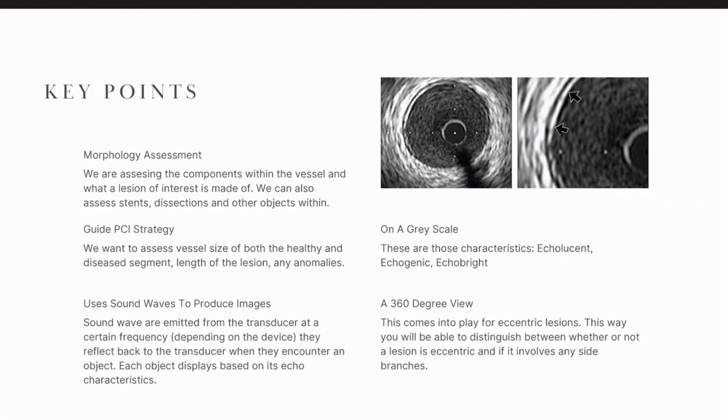Some key points: what is IVUS really used for? First of all, morphology assessment — meaning what is it made of? We're assessing the components within the vessel and what a lesion of interest is made of. Of course, if there's other stuff in the lumen like stents, dissections, even thrombus, you're going to see that.